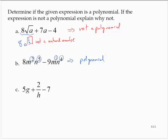I keep using the term natural number — let me remind you what that means. A natural number is a number from the set 1, 2, 3, 4, and so on.